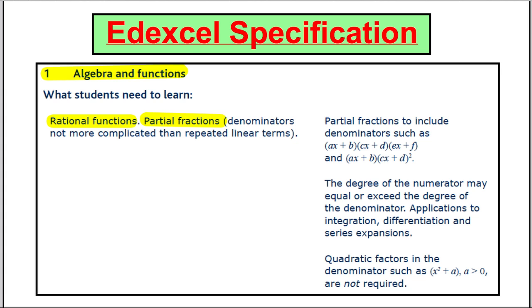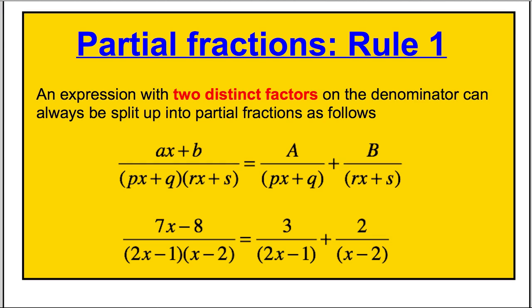This is the rule which I'll just introduce to you - there's no other way of saying other than giving you a rule. Rule one: an expression with two distinct linear factors on the denominator can always be split up into partial fractions as follows. If we have this type of arrangement, here's a linear factor and here's a different one - that's what the word distinct means - we can split it up as a number over the first linear factor plus a number over the second linear factor.